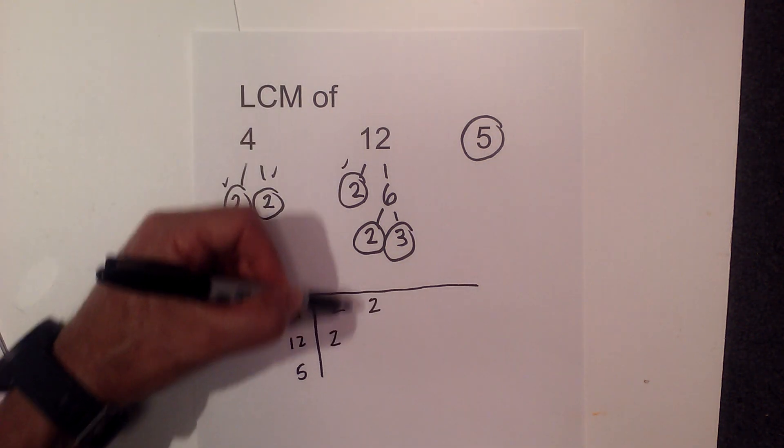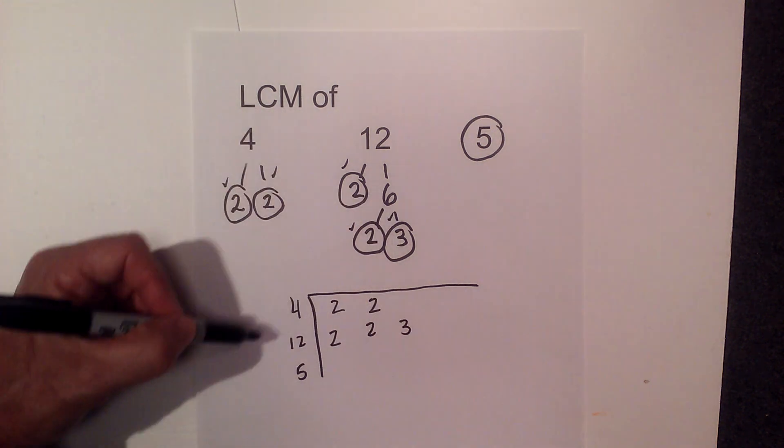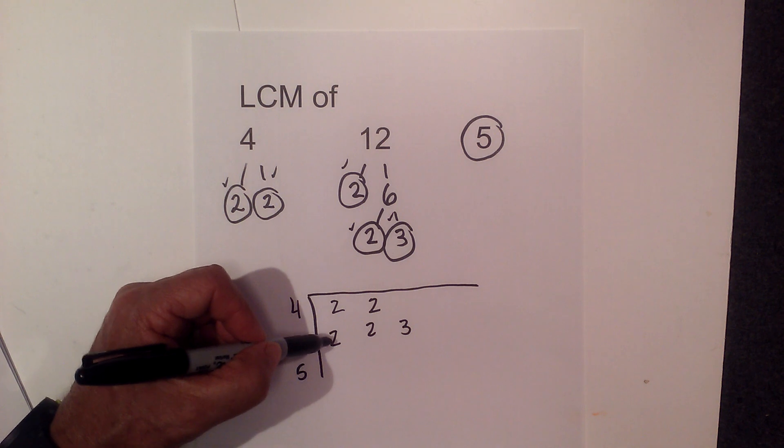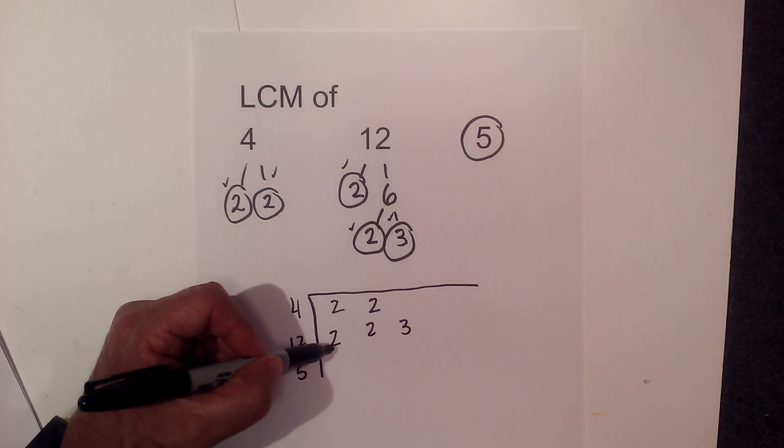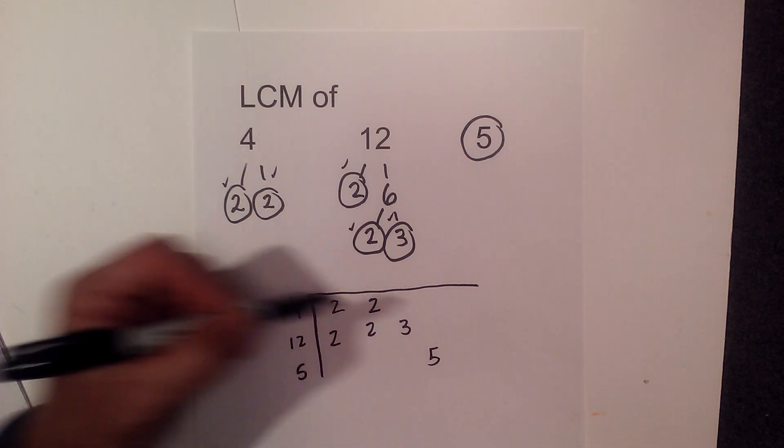I'm gonna go again 2 and 2 and 3 and then I'm going to skip these because with 5 I don't have a 2, I don't have a 2, I don't have a 3 so I'm gonna write the 5 here.